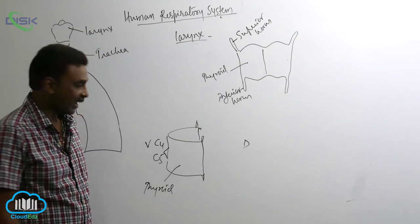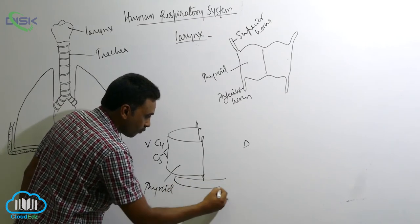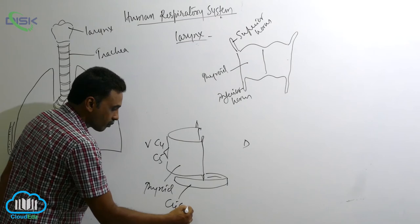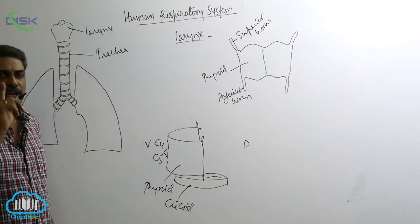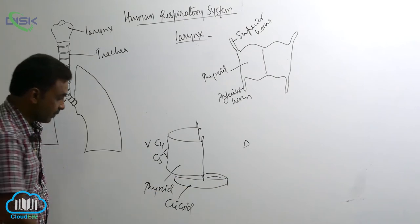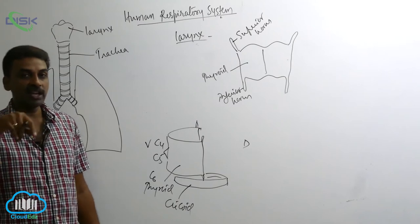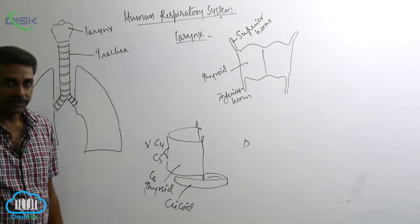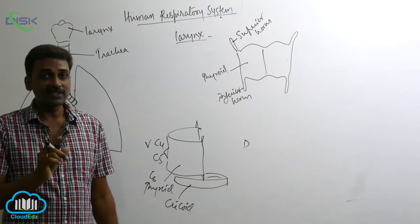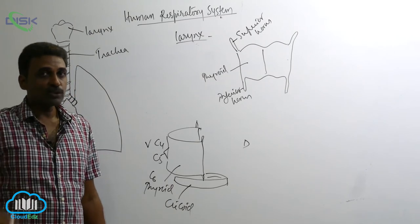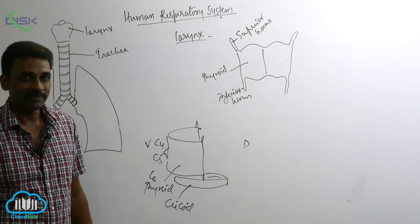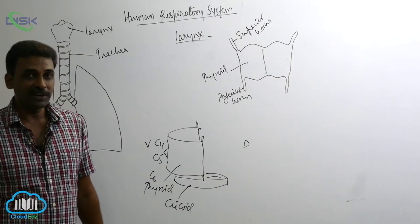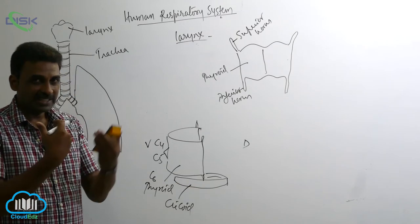The second cartilage is the cricoid — a ring-like cartilage, also made up of hyaline cartilage. It is present at the level of C6, the sixth cervical vertebra. The inferior horns of the thyroid articulate with it. The cricoid forms the inferior-most part of the larynx and also becomes the superior-most ring of the trachea. It is the only complete ring; all other tracheal rings are incomplete.